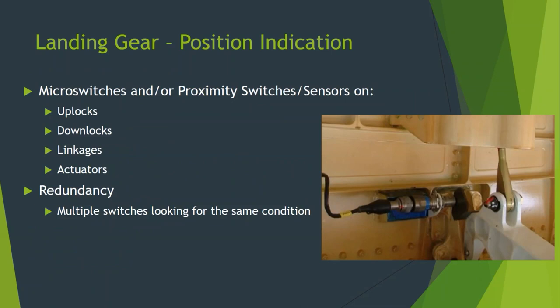This picture shows a proximity switch or proximity sensor — there's no physical contact. It has an inductive sensor and a metal target in front of it that moves in front of or away from it depending on its position. Some gear use micro switches, but those being physical switches tend not to be as reliable, whereas proximity switches and sensors are very reliable because there are no moving parts. These can be placed on up-locks, down-locks, various linkages, actuators, doors, drag braces, side stays, and torsion links — the scissors that keep the wheels pointing in a certain direction.